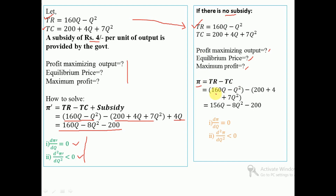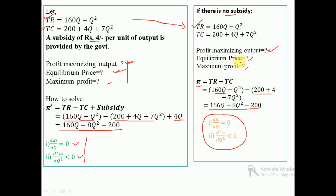Without subsidy, the profit function equals TR minus TC. Substituting the given functions, the profit function without subsidy equals 156q minus 8q squared minus 200. Applying the first and second order conditions of profit maximization gives the profit maximizing output, equilibrium price, and maximum profit without subsidy. We then compare profit maximizing output, equilibrium price, and maximum profit with and without subsidy to see the impact of the subsidy.